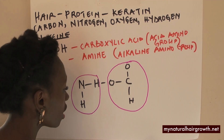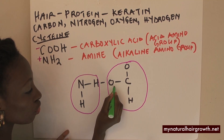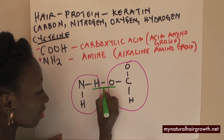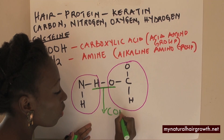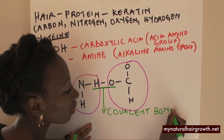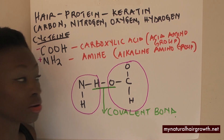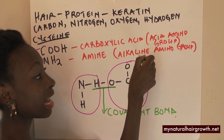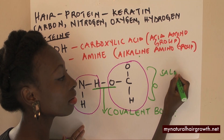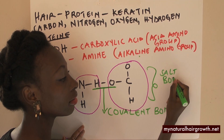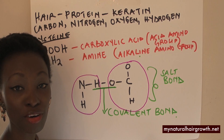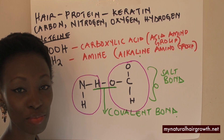Therefore, they are sharing these two molecules, so this is in fact what is called a covalent bond. Now, when an alkaline and an acid mix, they make a salt, so this here is a salt bond. And there you have it — the basics of how your hair is formed. Stay tuned for the next episode.